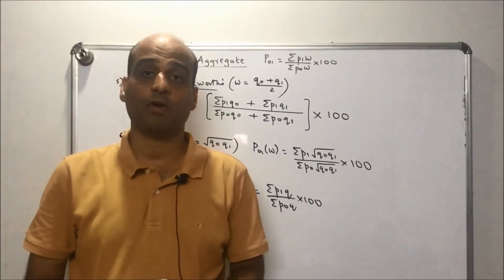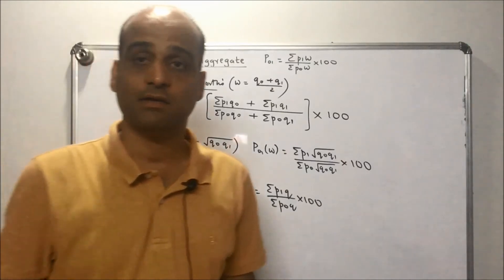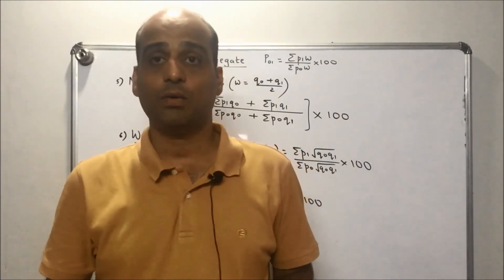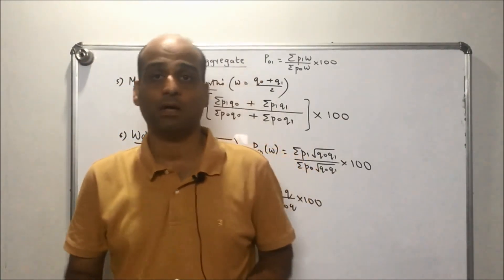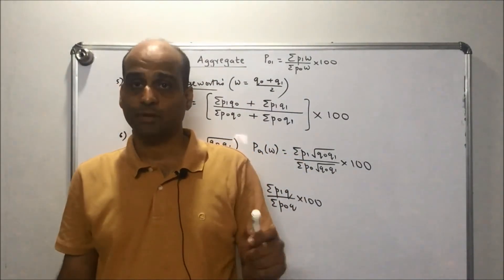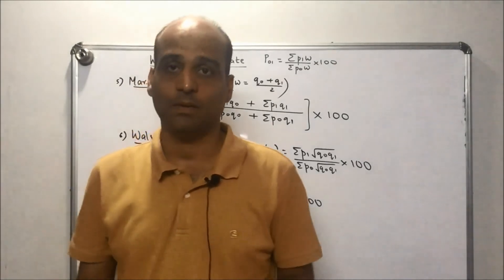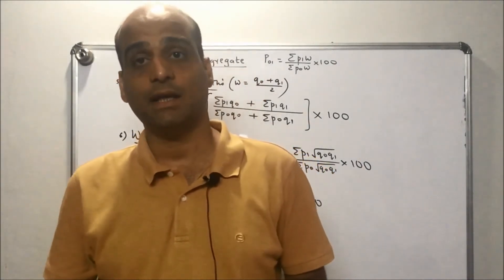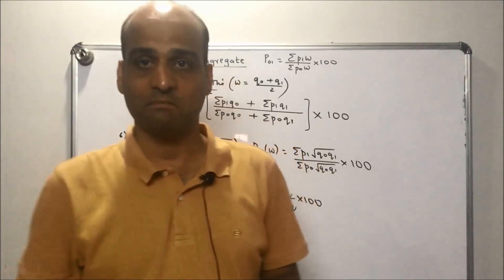These were the formulae studied under the aggregative method. Now let's proceed with the second method — the average of relatives method — and see how we construct index numbers under it.